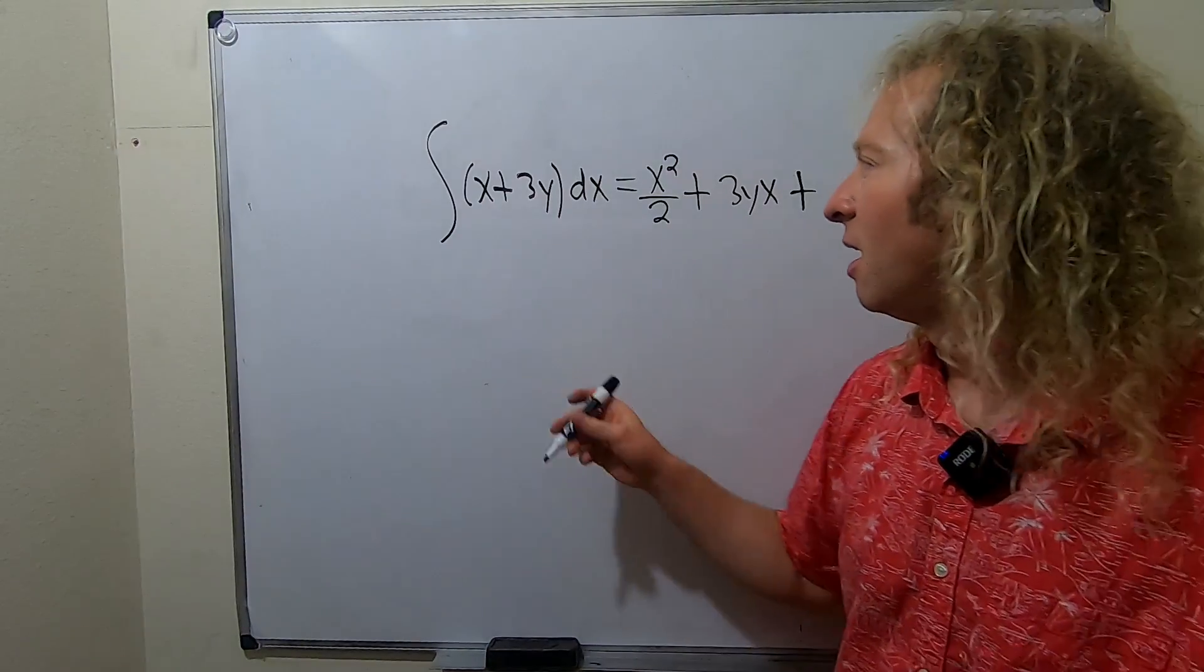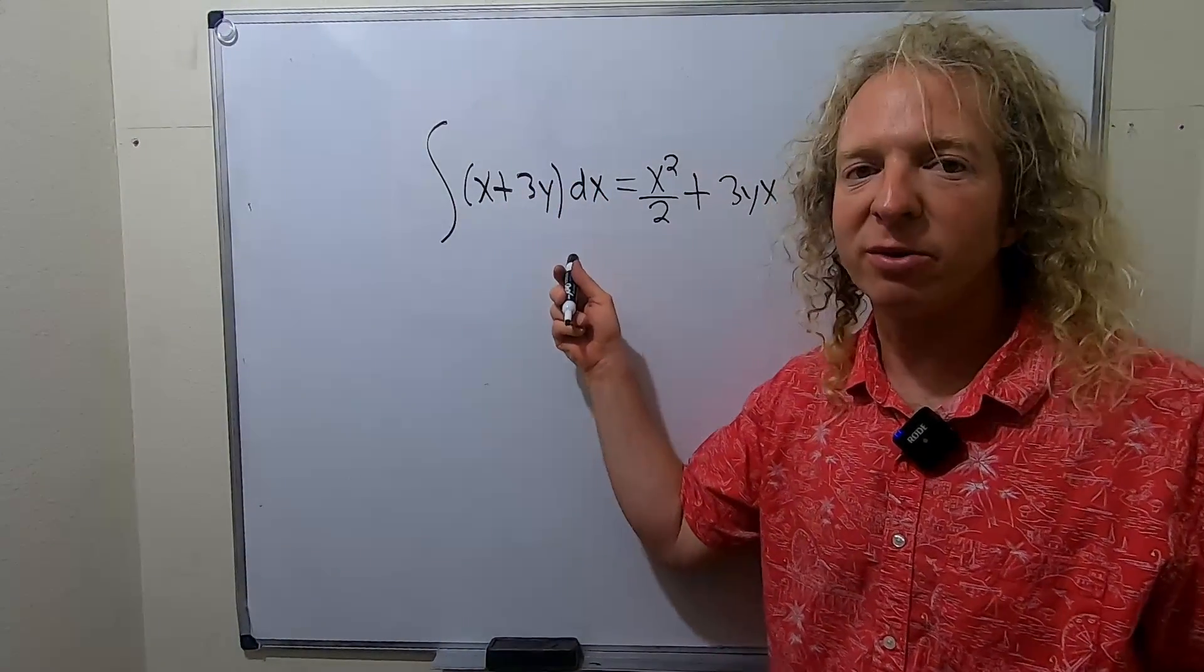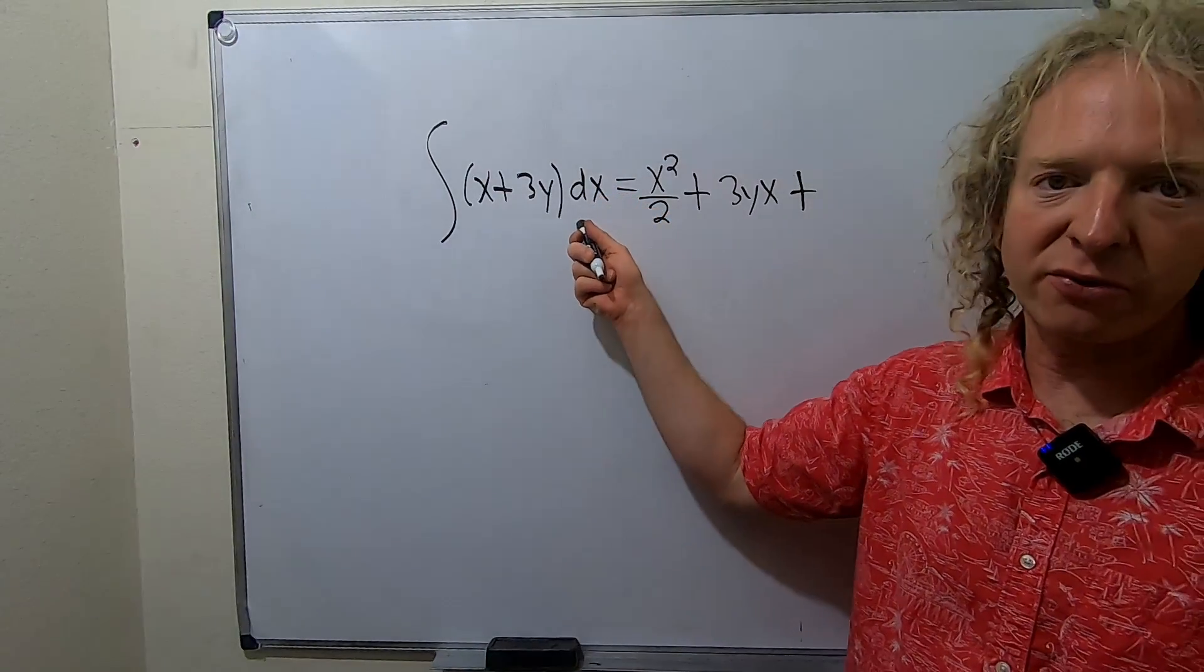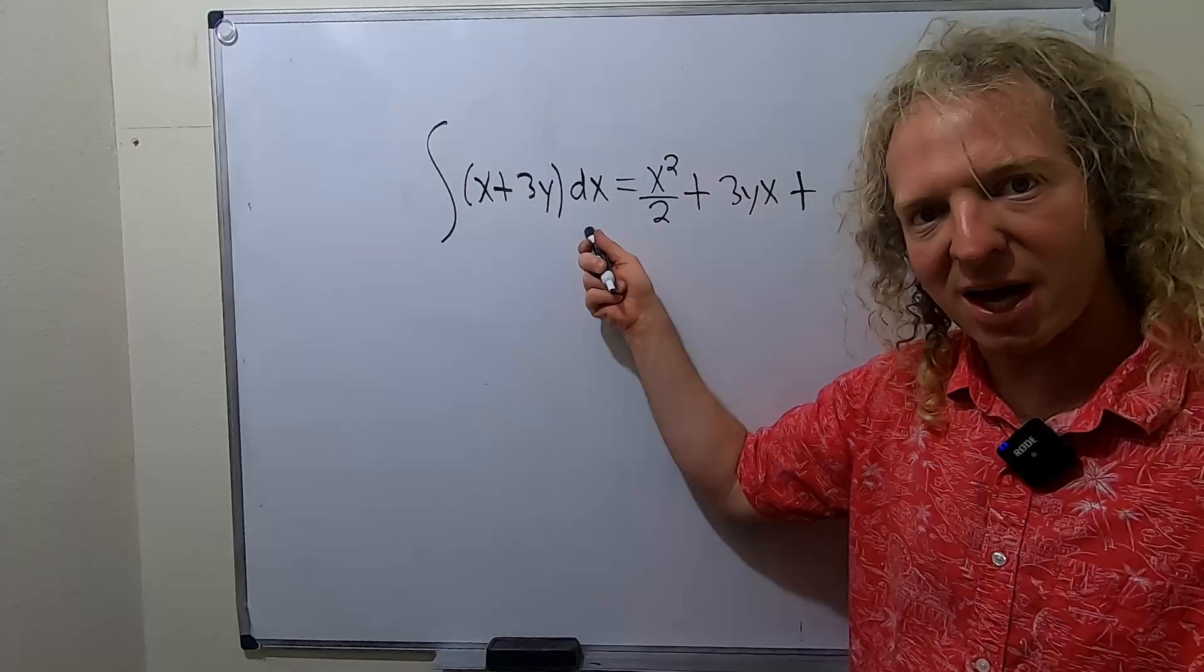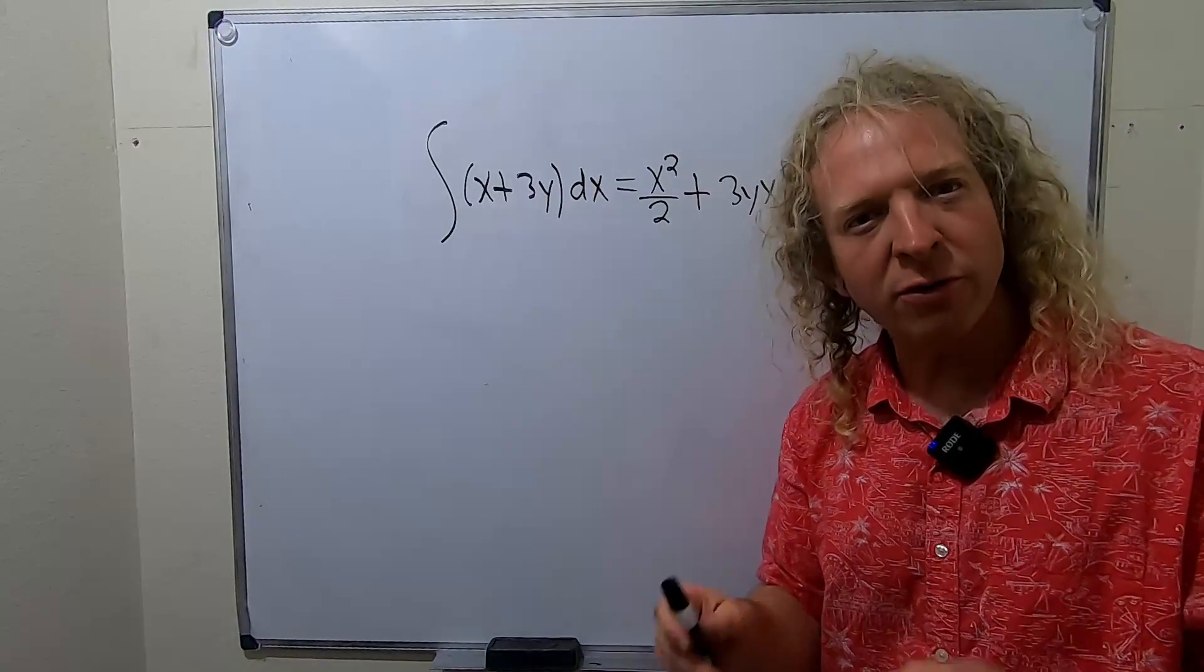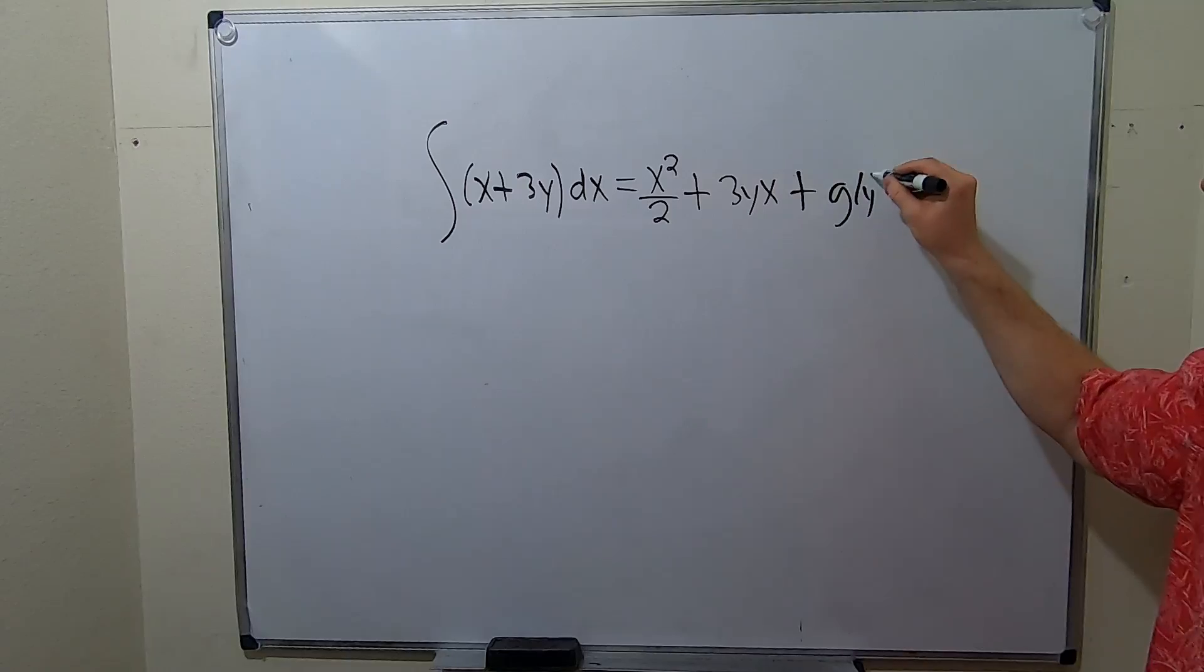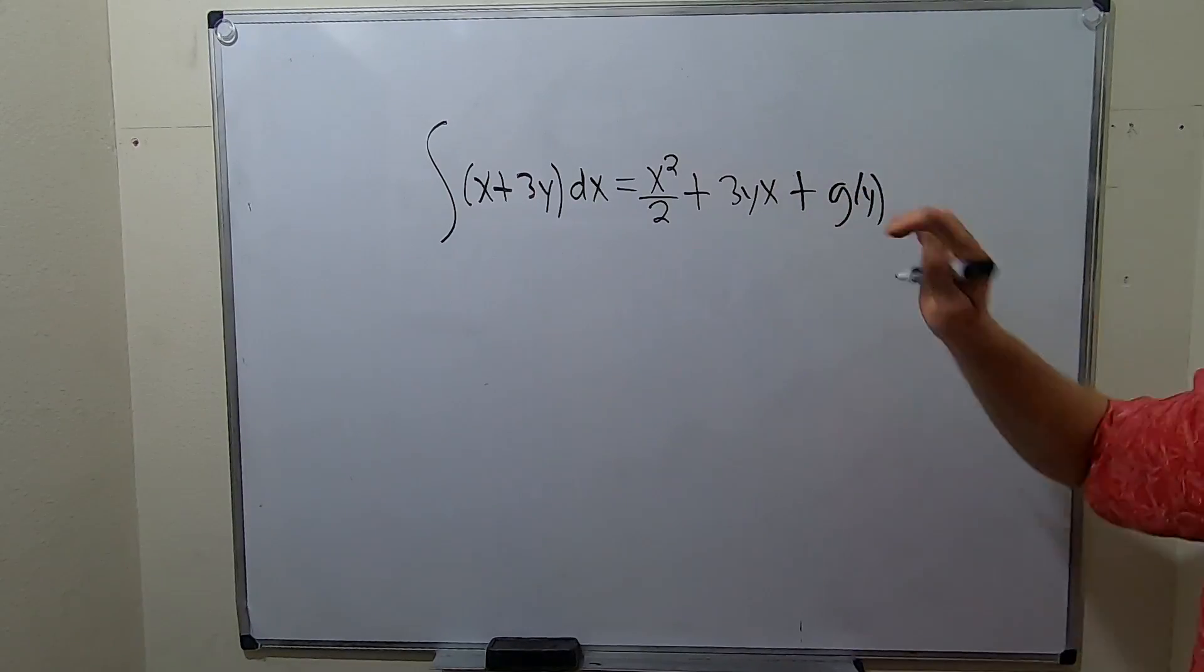Except in this case, you have a function of two variables. So what you do is you add an unknown function of the other variable. So because we integrated with respect to x, we have to add an unknown function of y. So I'm going to call it g of y. So this is like your arbitrary constant function.